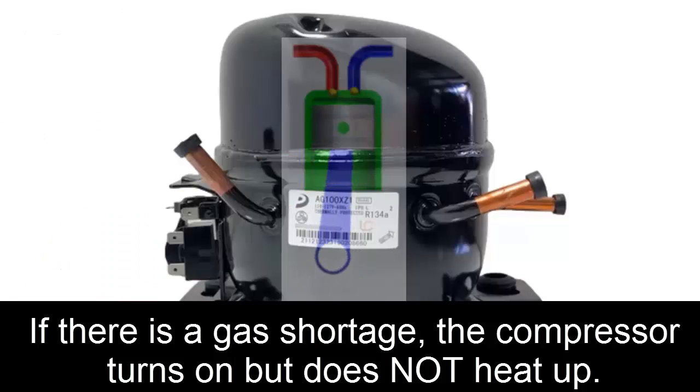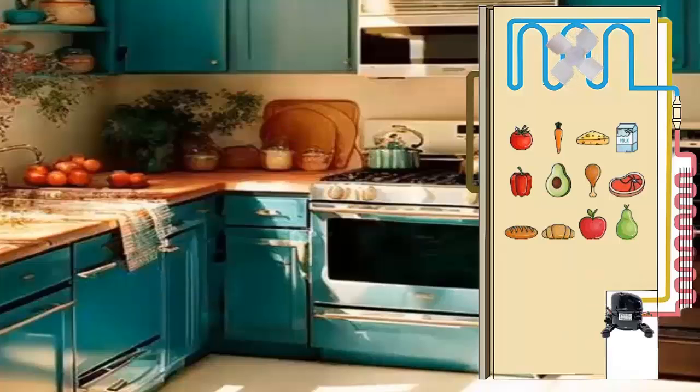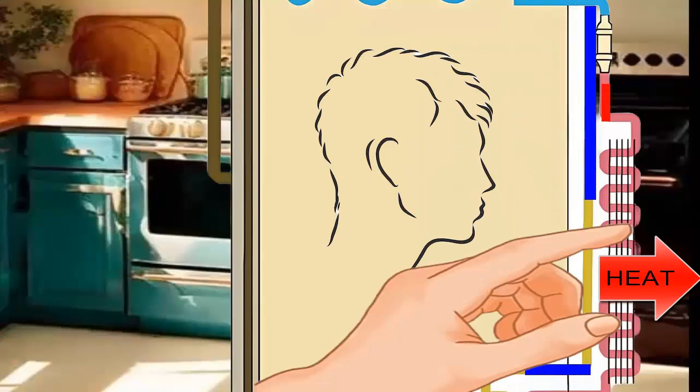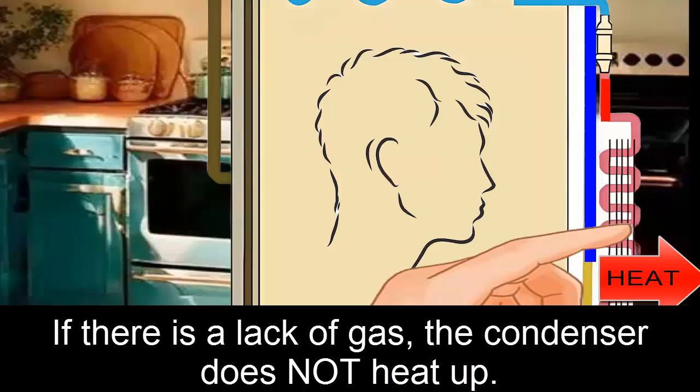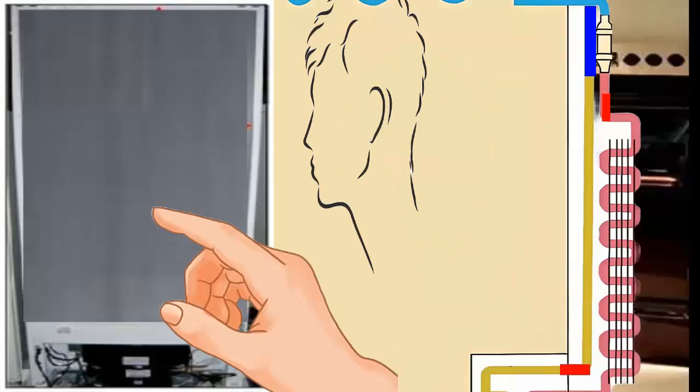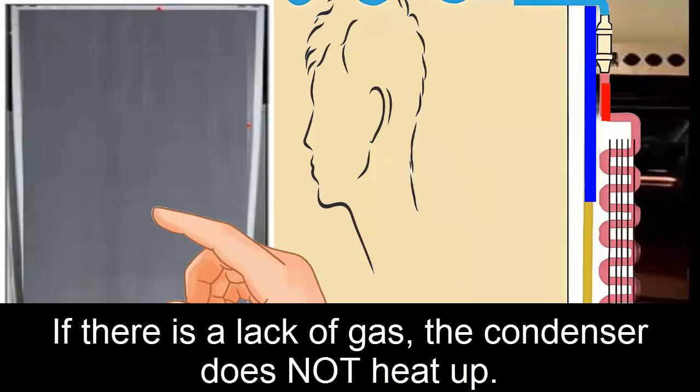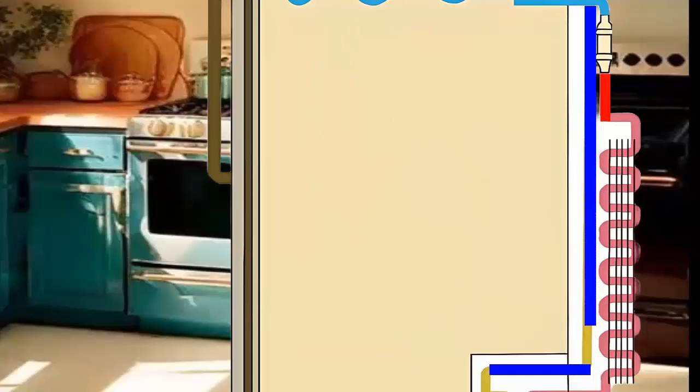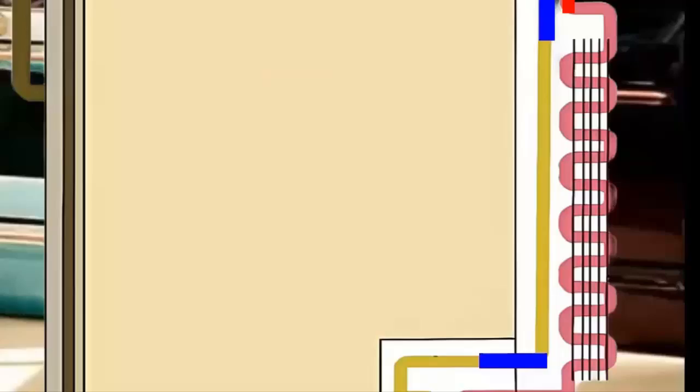Method 2: Checking the Condenser. Touch the condenser or external grill. If the equipment is working well, it will be hot, as this component expels heat. In models without an external grill, touch the back and side of the refrigerator, which should also be hot. Check for oil stains on the pipes. The presence of oil indicates a refrigerant leak.